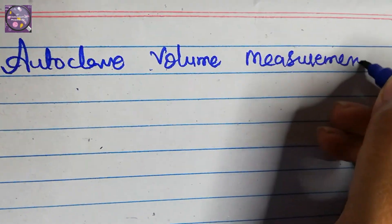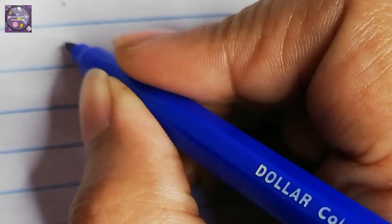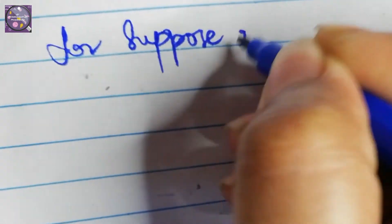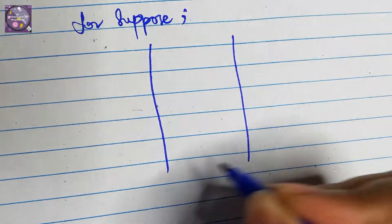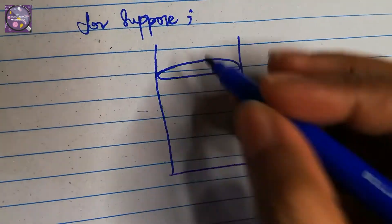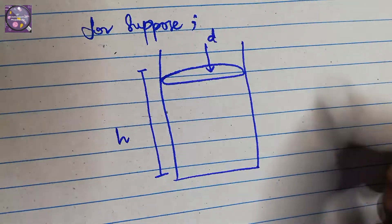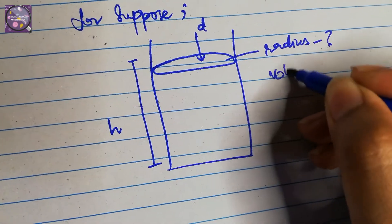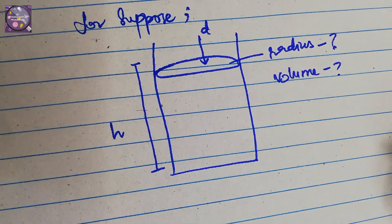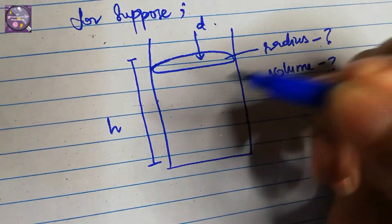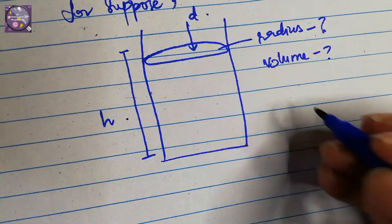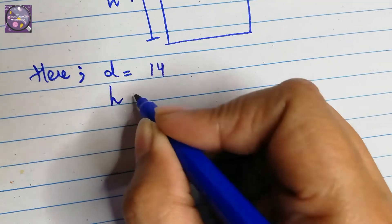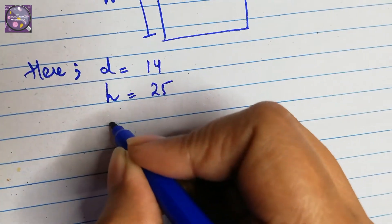Suppose we have an autoclave — let's draw it. It has a depth and a height. We don't know the radius and we don't know the volume. So what do we do? We know its depth and we know its height. Suppose the autoclave depth is 14 inches and height is 25 inches. We don't know the radius and we also don't know the volume.